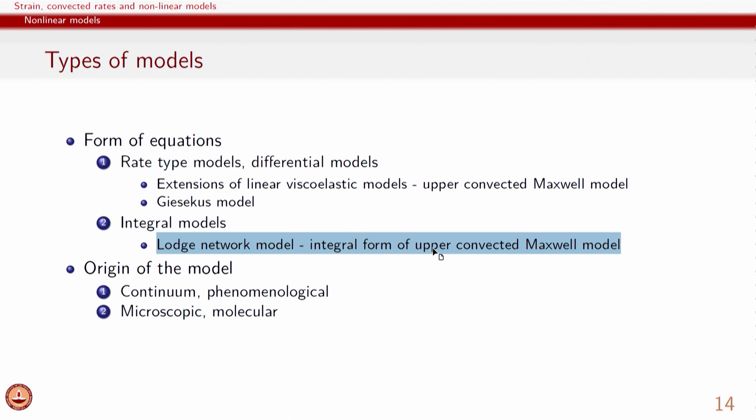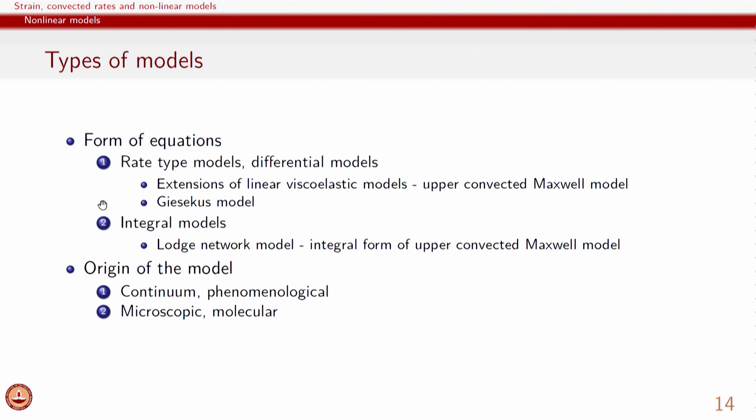One most commonly known integral form accounts for reptation in polymer melts. Given that macromolecules are entangled with each other, any description of rheological response of a polymer melt requires description of entanglement and reptation. To account for reptation, Doi and Edwards developed a model in integral form. Quite often we may have a model with both integral and rate type expressions; sometimes it is not possible to transform between them due to complexity. The form of equations is important for understanding the phenomenological basis for how governing equations were arrived at.